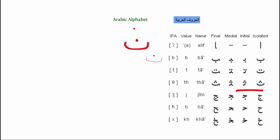If we want to write noon followed by alif, we simply add a plain alif stroke after noon — that gives us 'na.' If we add another alif at the end with a liaison, we get 'anna,' and you'll sometimes see a hamza on top. 'Anna' means 'I' in Arabic.